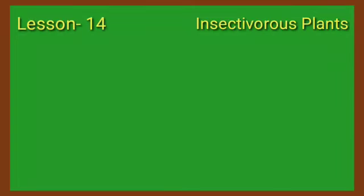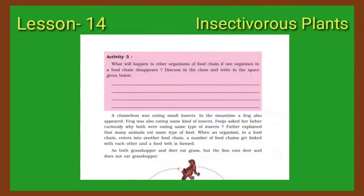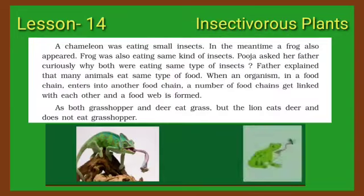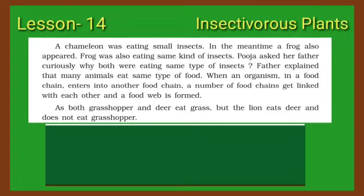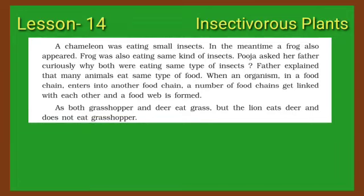Children, we read in the last paragraph on page no. 89: a chameleon was eating small insects. In the meantime, a frog also appeared. The frog was also eating the same kind of insects. Puja asked her father curiously, why were both eating the same type of insects? Father explained that many animals eat the same type of food.